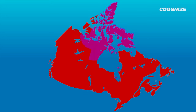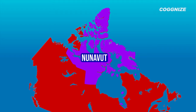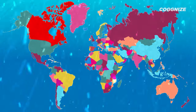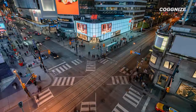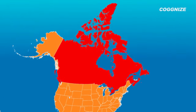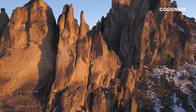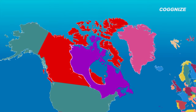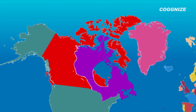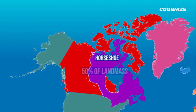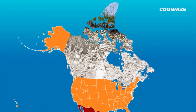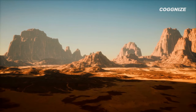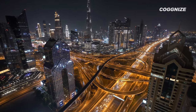Contrary to popular belief, extreme cold temperatures in northern Canada are not the primary reason for the sparse population. The critical factor is Canada's unique geological feature called the Canadian Shield. Spanning nearly 5 million square kilometres, it extends from the USA in the south to the Arctic archipelago in the north and makes up almost 50% of Canada's landmass. Its rocky terrain and thin topsoil layer make it unsuitable for agriculture, and combined with the harsh northern climate, make it challenging to establish settlements and infrastructure.